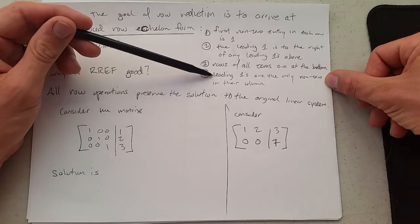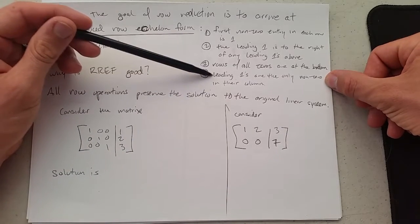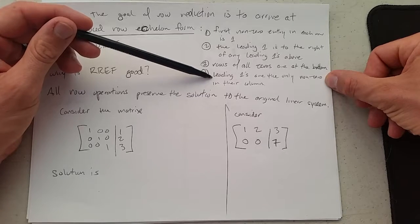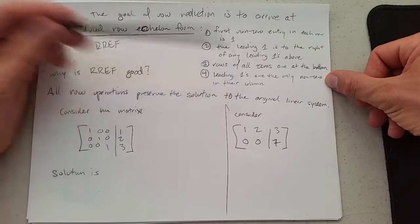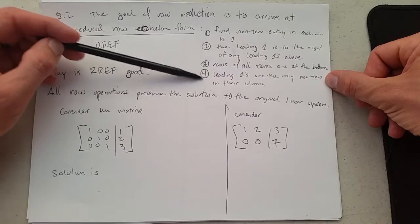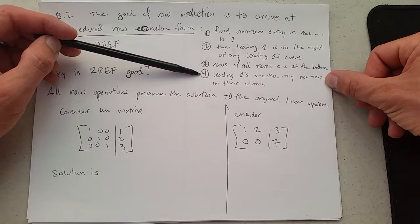And it turns out these leading 1's tell you which variables are not free. So I like to think of these 1's as locking down variables, meaning that it makes them not free. So this step 4 really tells you what variables are not free.